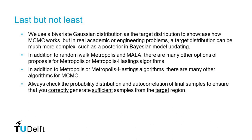Last but not least, in this lecture we used a bivariate Gaussian distribution as the target distribution to showcase how MCMC works. But in real engineering problems, the target distribution can be much more complex, such as a posterior in Bayesian model updating. In addition to Random Walk Metropolis and MALA, there are many other options of proposals for the Metropolis or Metropolis-Hastings algorithm.